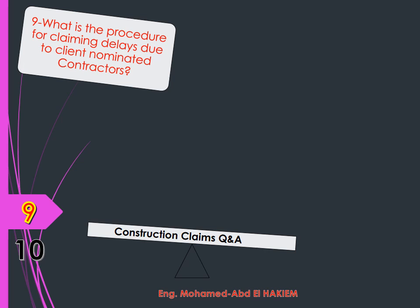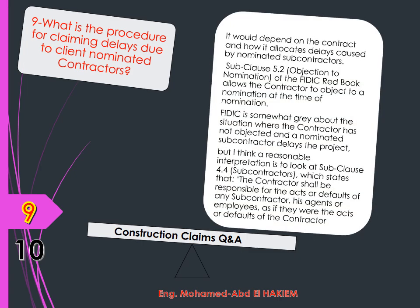Question 9: What is the procedure for claiming delays due to client-nominated contractors? Answer: It would depend on the contract and how it allocates delays caused by nominated subcontractors. Sub-clause 5.2 Objection to Nomination of the FIDIC Red Book allows the contractor to object to a nomination at the time of nomination.